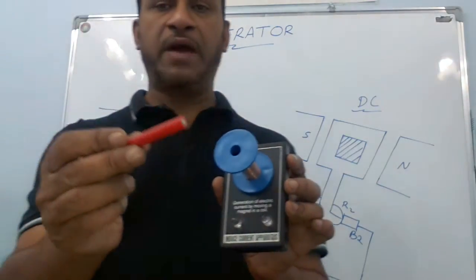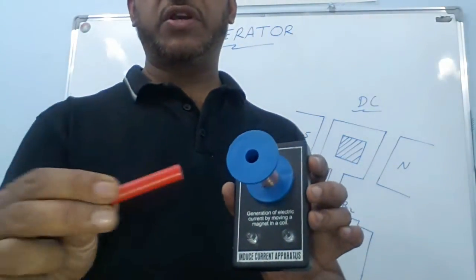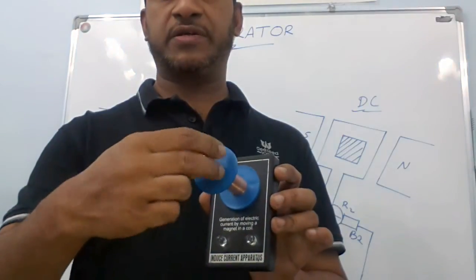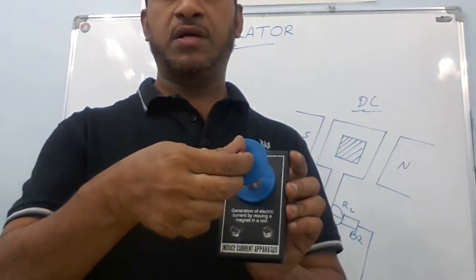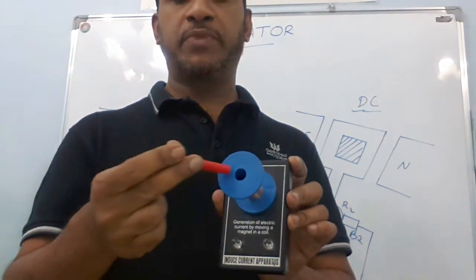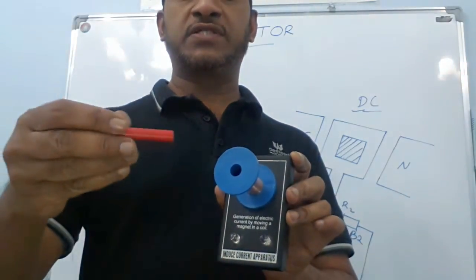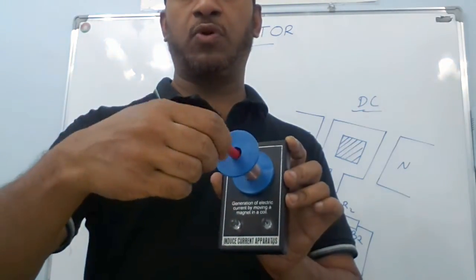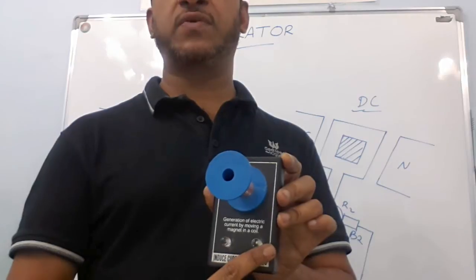I also have a strong magnet. If I move this magnet inside the coil — suppose I am moving the south pole of the magnet — you can see the LED on the right side is glowing. When I move the magnet inside the coil, it induces a current, and by using that current, this LED is glowing. If I reverse the direction of the magnetic field and use the north pole, you can see the left side LED is glowing.